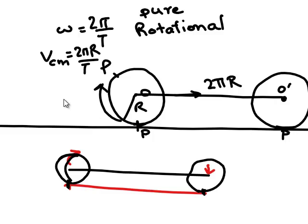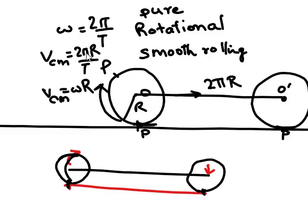We have an important relation now: in case of smooth rolling when there is no slipping, we can say that V_cm equals omega times r. You can see this from the above two equations.